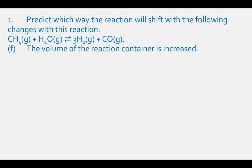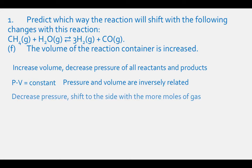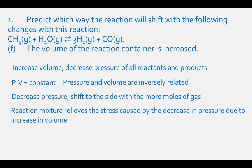In part F, if we increase the reaction container's volume, we will also decrease the pressure of all the reactants and products because pressure times volume equals a constant — pressure and volume are inversely related. If we decrease the pressure of the whole reaction mixture, the equilibrium will shift to the side with more moles of gases, as the reaction mixture relieves the stress caused by the decrease in pressure. Therefore, the reaction will shift to the right, to the side with more moles of gas — the products.